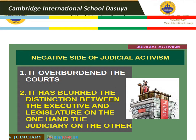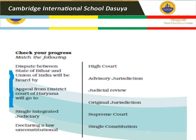Every coin has two sides — here is the negative side of Judicial Activism, found on pages 136 and 137. First, it has overburdened the courts due to the large number of PILs filed. Second, it has blurred the distinction between the executive and legislature on one hand, and the judiciary on the other — it is not clear what belongs to each branch, as the courts have been involved in resolving questions which belong to the executive, creating confusion.